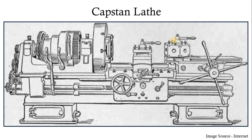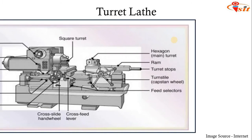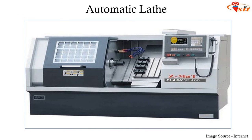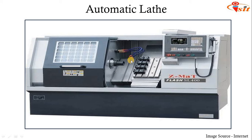This is the picture of a capstan lathe. This is a turret lathe. This is an automatic lathe — in this automatic lathe we can feed programs based on numbers and alphabets, and based on that the machine can perform operations by taking different tools based on the process required, giving good results to the work piece. This is the automatic lathe, or we can call it a CNC machine.